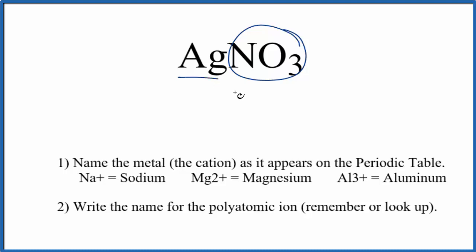We also have a metal, silver, which is a transition metal. So we have a metal and these nonmetals in the polyatomic ion. This is an ionic compound.